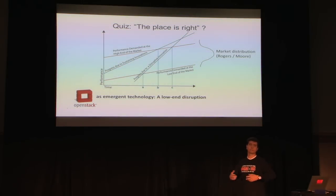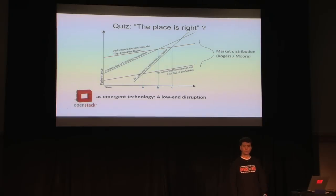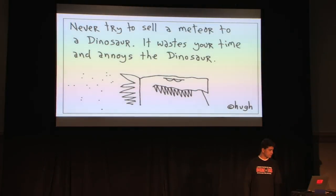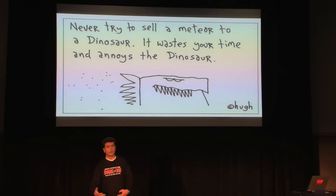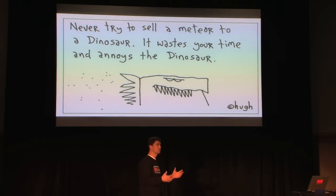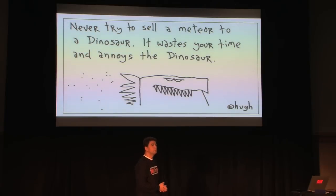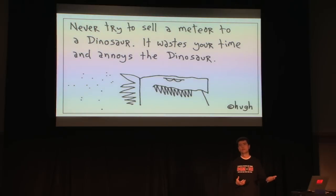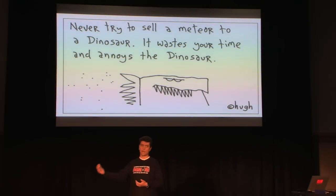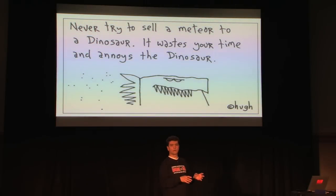So how do we position OpenStack to enterprise, which by definition are very large customers, and like Geoffrey Moore showed, they are a very large majority out there? One way of how NOT to do it is this: when we go into a large shop and realize that after some analysis, their technology, process, culture — the whole thing — is dying, we don't necessarily quite put it that way to them, because it doesn't help you, and far more importantly, it just annoys them. Because as the joke goes, in the long run we are all dead. It's all about timelines and how we position when and in which terms.